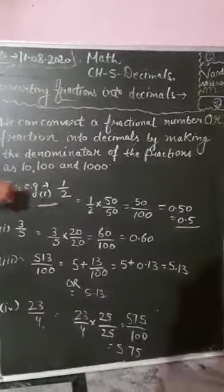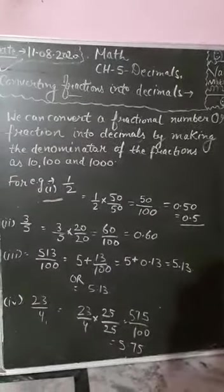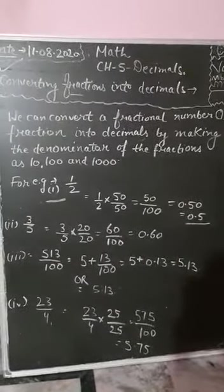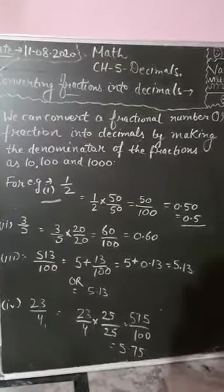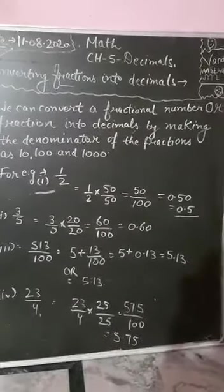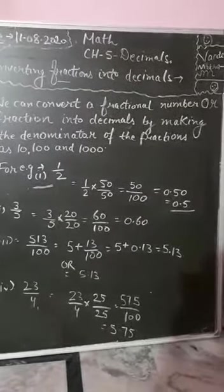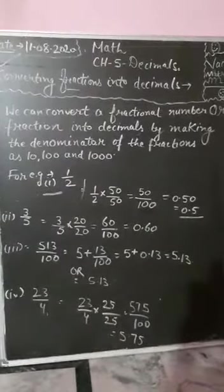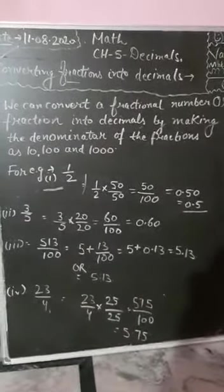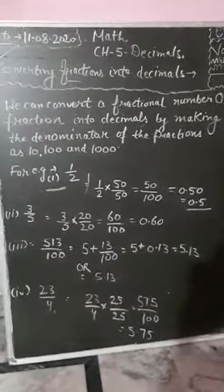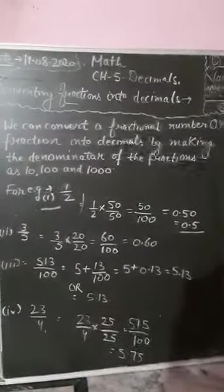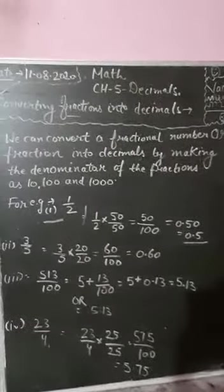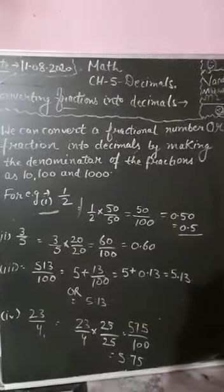How can I make the denominator 100? We have to multiply with the same number in the numerator as well as the denominator. So I have multiplied by 50 over 50: 1 by 2 multiplied by 50 upon 50. 50 ones are 50, and 50 times 2 is 100. So I have made the denominator as 100. Now write 50 upon 100.